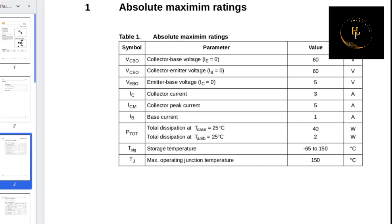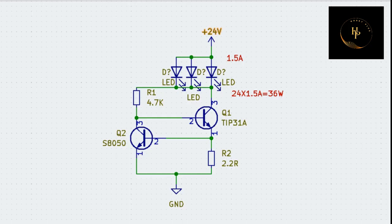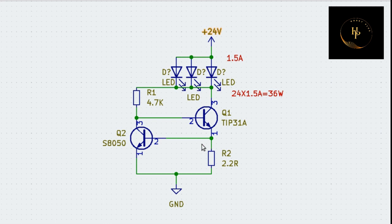We are looking at our main circuit: our LED panel is 36 watt, and our transistor rating is 40 watt. Our LED panel is 1.5 ampere, and our transistor collector current is 3 ampere. The LED panel is 24 volt and the transistor breakdown voltage is 60 volt — so we can use this transistor. But you have to use a heat sink because the transistor is rated 40 watt and you are using 36 watt.